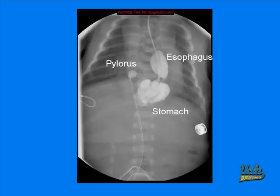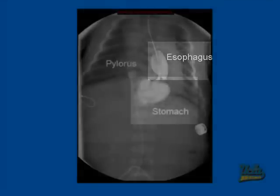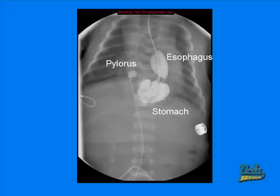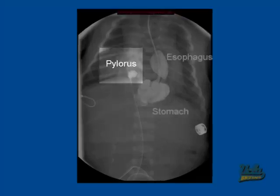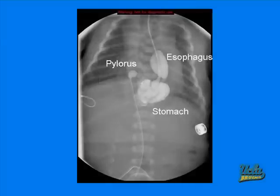In this upper GI of the infant in question, we see a very dilated esophagus on top. We have a stomach filled with barium contrast, as seen in white, and we have a pylorus to the upper right of the stomach. As of now, we can't really see that this is a case of organoaxial gastric volvulus, but once we go through the symptoms and come back to re-evaluate this picture, it will be much easier to see.